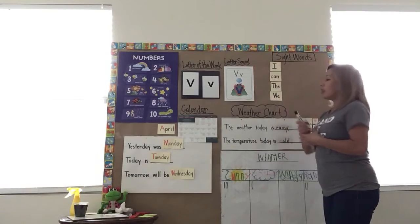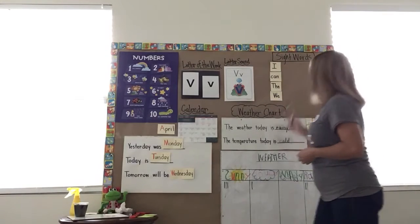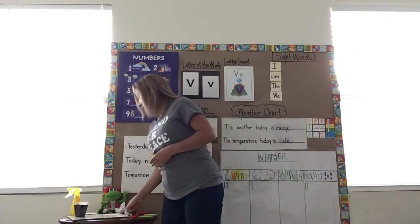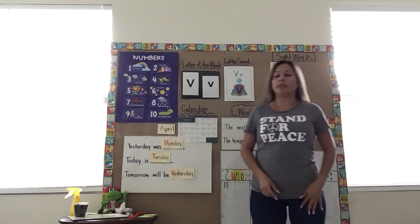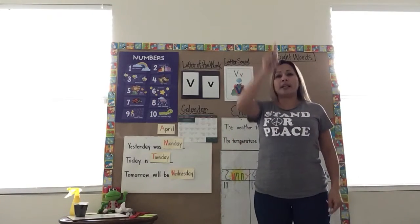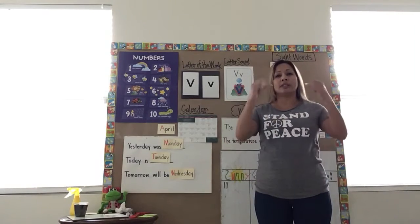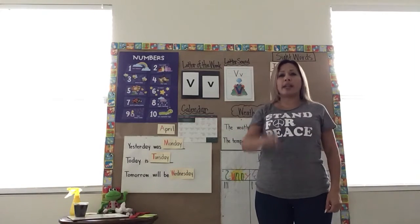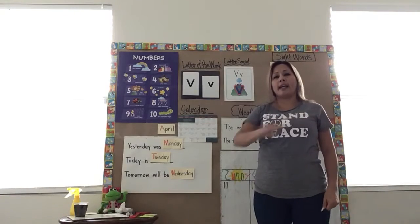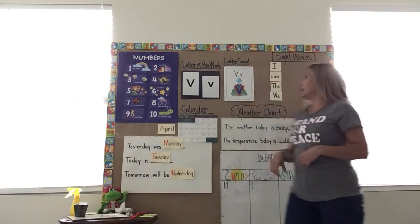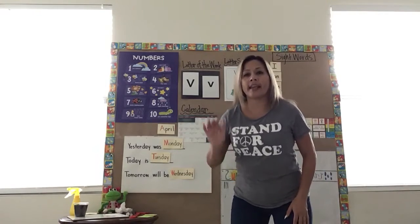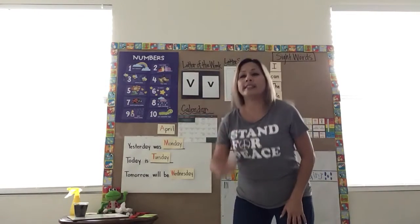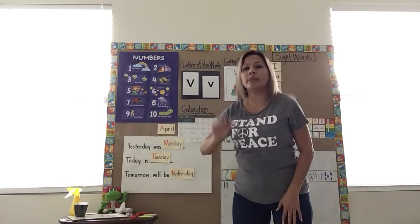Now we have four sight words on our wall. Let's review them and then we'll add our new one. First one is I — straight and tall with a hat and shoes. I. Next one, can — C-A-N, can. Then the — T-H-E, the. And yesterday we learned the word we — W-E, we. These are review — we learned them already but we're reviewing them.